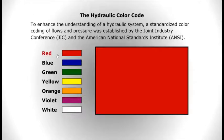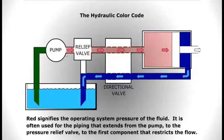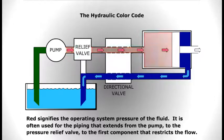Red signifies the operating system pressure of the fluid. It is often used for the piping that extends from the pump to the pressure relief valve to the first component that restricts the flow.